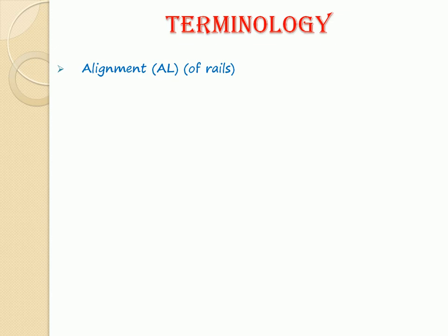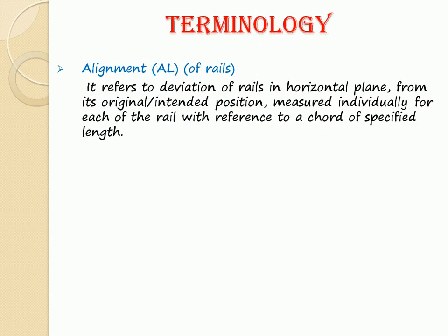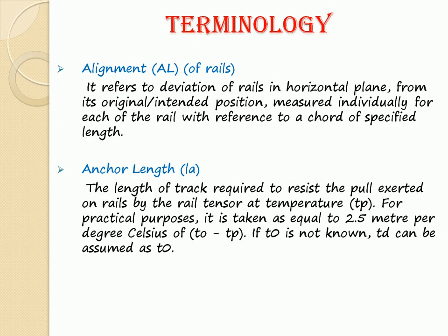Terminology. Alignment of Rails: It refers to deviation of rails in the horizontal plane from their original position, measured individually for each rail with reference to a chord of specified length. Anchor Length: The length of track required to resist the pull exerted on the rail by the rail tensor at temperature Tp. For practical purposes it is taken as equal to 2.5m per degree Celsius of TO minus TP. If TO is not known, Td can be assumed as TO.